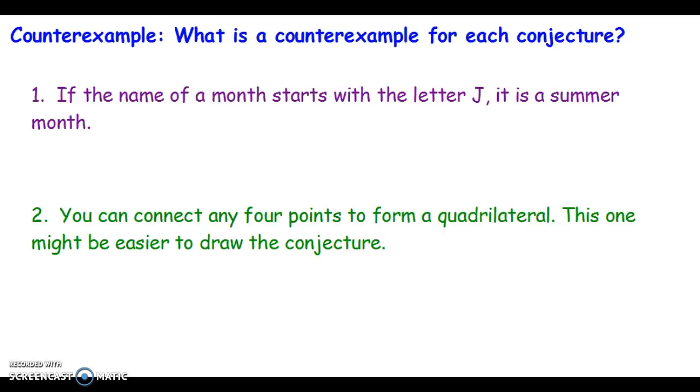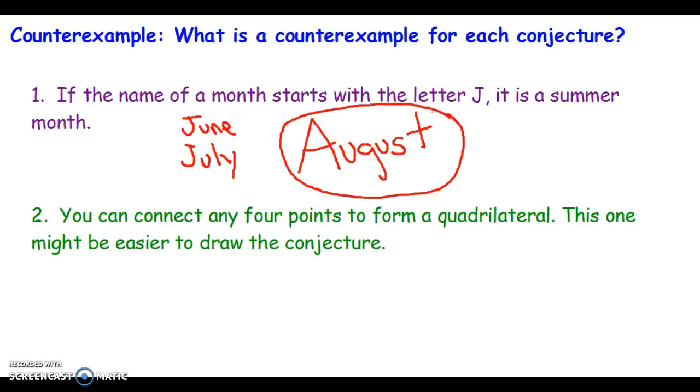Let's see a counterexample for each conjecture. If the name of a month starts with the letter J, it's a summer month. Well, June is a summer month. July is a summer month. But August is also a summer month. August does not start with a J. So therefore, August is my counterexample of a month that does not start with a J.